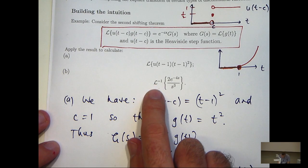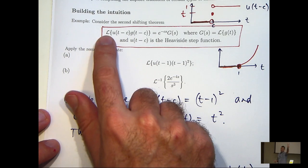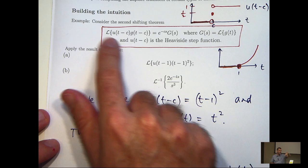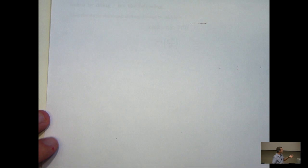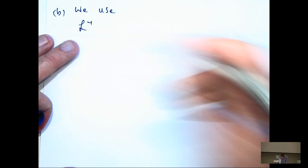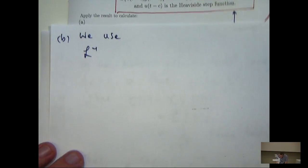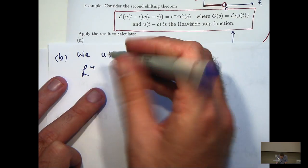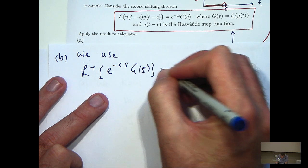So let's have a look at part b. In part b, we're asked to calculate the inverse Laplace transform of this expression here. Now I can still use the second shifting theorem. All I need to do is rearrange it slightly. So I would take the inverse transform of both sides and form the following. So if I take the inverse transform of both sides and rearrange, I'll get the following.